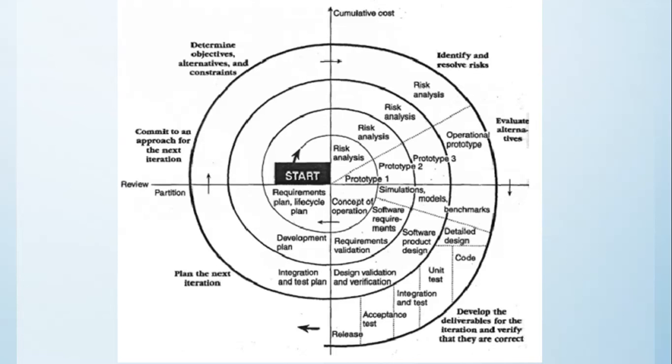The only disadvantage of the Spiral model is that it's complicated. It requires conscientious, attentive, and knowledgeable management. It can be difficult to define objective, verifiable milestones that indicate whether you're ready to add the next layer to the cinnamon roll. In some cases, the product development is straightforward enough, and project risks are modest enough that you don't need the flexibility and risk management provided by the Spiral model.